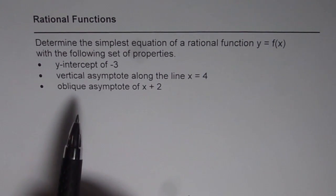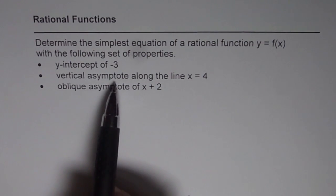Now in this question we need to find a rational function with given oblique asymptote, vertical asymptote, and y-intercept.